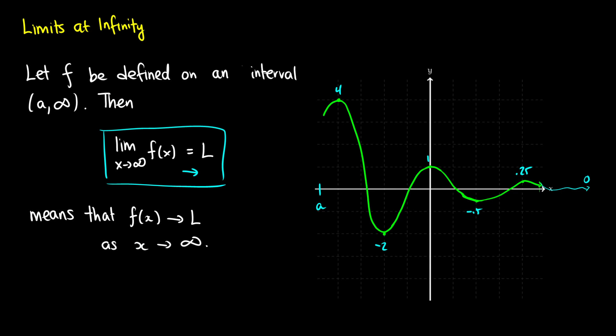When we say the limit as x approaches infinity of f(x) equals L, we should think more of an arrow — it tends towards L. So in this case, as x gets closer and closer to infinity, for our green curve, we would say that f(x) tends towards 0. We would write that the limit as x approaches infinity of f(x) is equal to 0, but we would say it tends to 0.